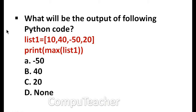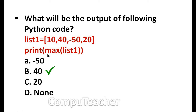What will be the output of the following Python code? List1 = [10, 40, -50, 20]. Print max(list1). The function max will return the maximum value in a list. What is the maximum value here? 40.